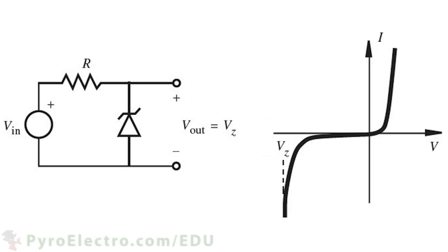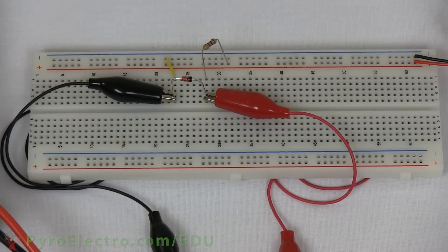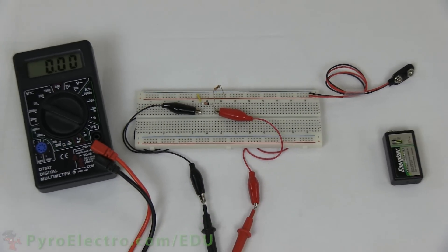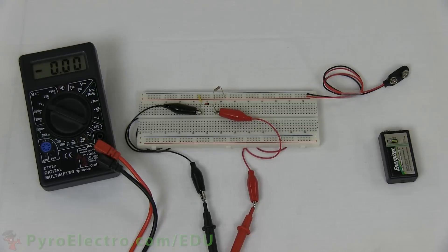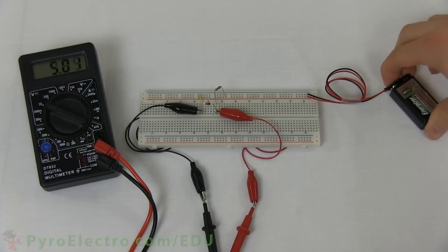So what is the benefit of being able to allow current to flow at a Zener knee voltage? Well, what actually ends up happening is that the Zener diode will keep the output voltage steady at its Zener voltage. If we build and test this circuit with the Zener diode from the components kit, you'll see with a quick multimeter voltage measurement, the voltage is held steady at this Zener diode's knee voltage of 5 volts.